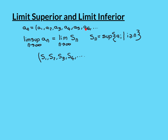For this to work, the set of all the terms in the sequence has to have a supremum — has to have a least upper bound — and therefore it's going to have to be bounded above. If it weren't bounded above, it certainly isn't going to have a least upper bound. So your sequence, in order for the limit superior to exist, will need to be bounded above, otherwise this whole definition doesn't work.